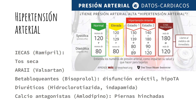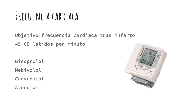El señor Trump intentó en su anterior legislatura cerrar este estudio y le mandaron a paseo. Estos son todos los medicamentos que usamos habitualmente para bajar la tensión, y aquí está la leyenda negra de cada uno de ellos. El ramipril provoca tos seca. Los ARA II, como el valsartán, también pero un poquito menos. Los betabloqueantes provocan disfunción eréctil y pueden dar sensación de hipotensión ortostática. Los calcioantagonistas pueden provocar que se hinchen las piernas.